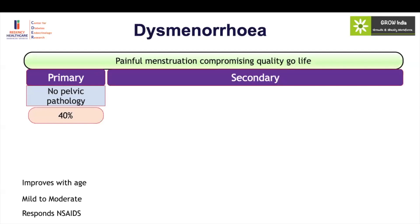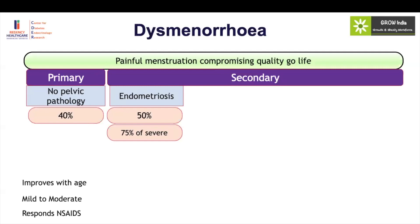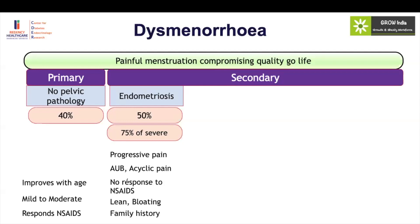Secondary dysmenorrhea is due to pathology. About 50% of adolescent girls with moderate to severe dysmenorrhea have endometriosis, and 75% if there is associated cyclic pain. Usually they have progressive pain, irregular bleeding, cyclical pain, and pain not responding to NSAIDs. These girls are usually lean — it's a chronic inflammatory disorder that leads to intestinal dysfunction; most girls have symptoms of bloating, less appetite, and they are lean. They often have a strong family history. So if these pointers are present, you should suspect endometriosis, as it is the most common cause of secondary dysmenorrhea in adolescent girls.